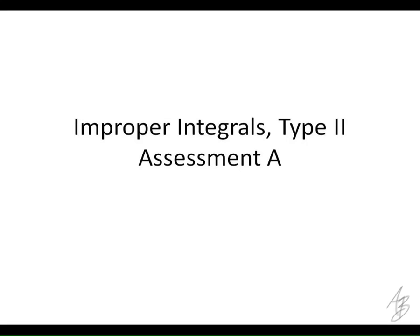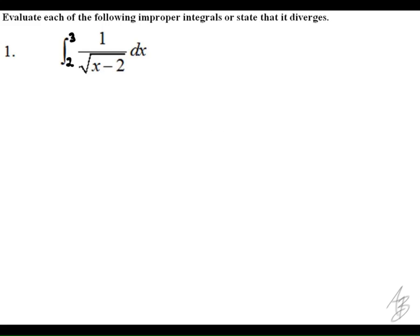Let's take a look at the solutions for the second type of improper integrals. These are the type of integrals where we have a vertical asymptote, and usually one of the limits will be where the vertical asymptote is, although it doesn't have to be.